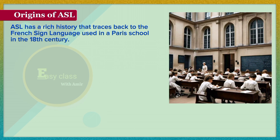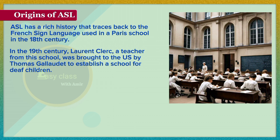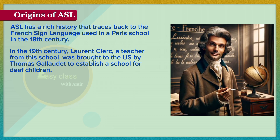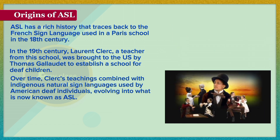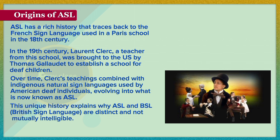ASL has a rich history that traces back to the French sign language used in a Paris school in the 18th century. In the 19th century, Laurent Clerc, a teacher from this school, was brought to the US by Thomas Gallaudet to establish a school for deaf children. Over time, Clerc's teachings combined with indigenous natural sign languages used by American deaf individuals, evolving into what is now known as ASL. This unique history explains why ASL and BSL are distinct and not mutually intelligible.